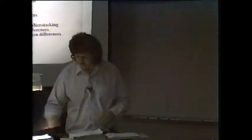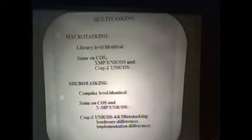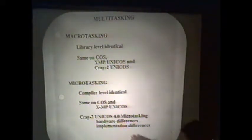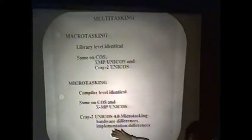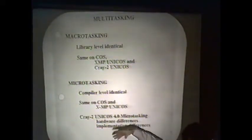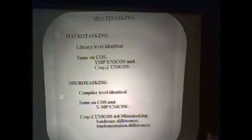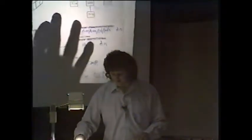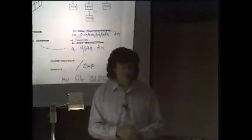We then have all our libraries and multitasking capabilities as well. The next page is about multitasking — not much to say. You have macrotasking as library level identical. Microtasking: the Cray 2 implemented it in 4.0, and because of hardware differences there are implementation differences. But the compiler directives are still the same. So the way they get it done is slightly different because of the architecture, but the user doesn't see any difference. Everything known about multitasking in COAS is still valid. And autotasking as well.